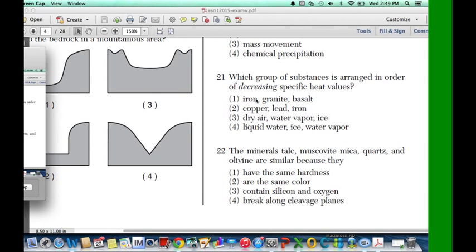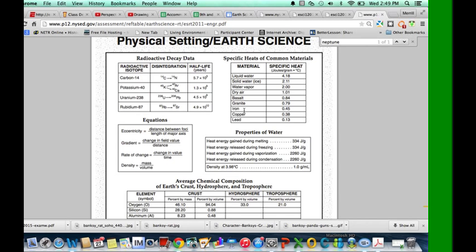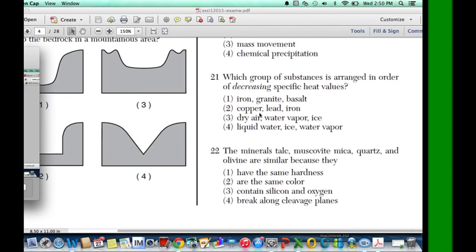Let's take a look at the questions and the list. So it says iron, granite, basalt. Let's compare that. Iron, which is 0.45. Granite, it looks like it's increasing. Basalt, it looks like it's increasing. So it cannot be that. It has to be in decreasing order. Let's go back to our question. It cannot be one.